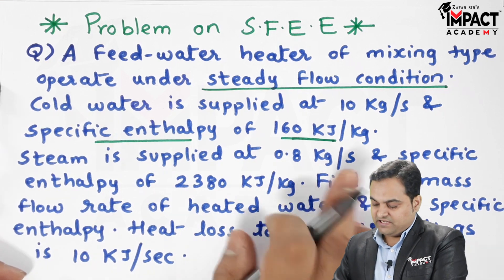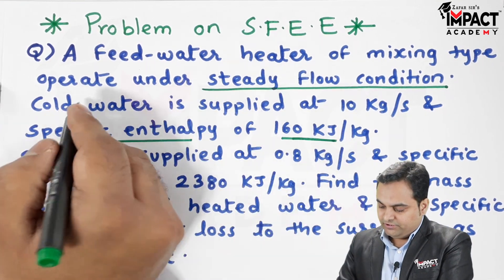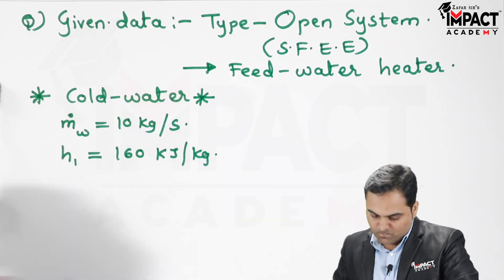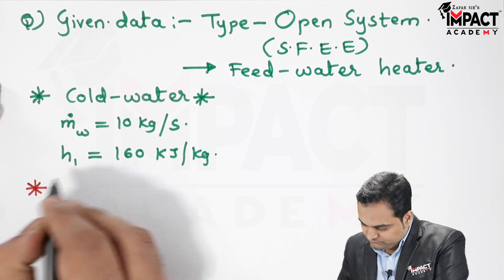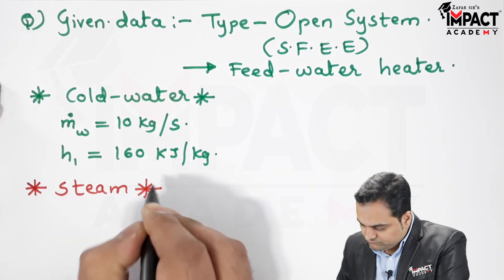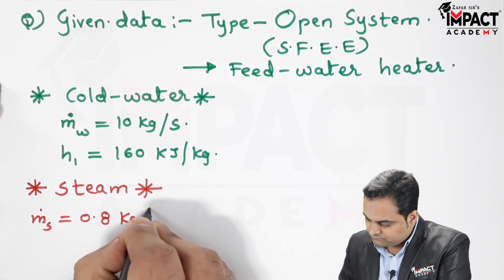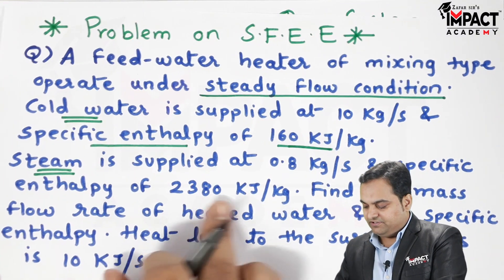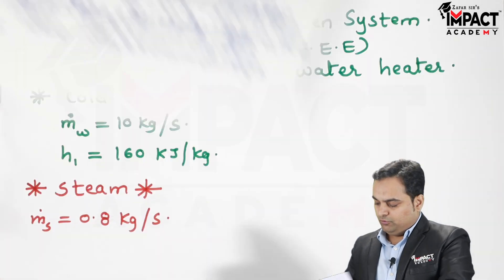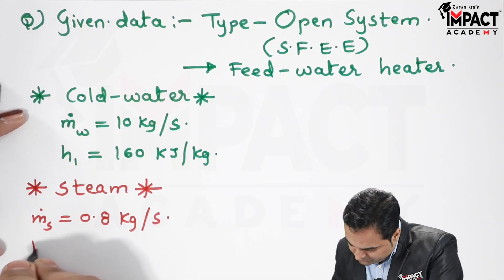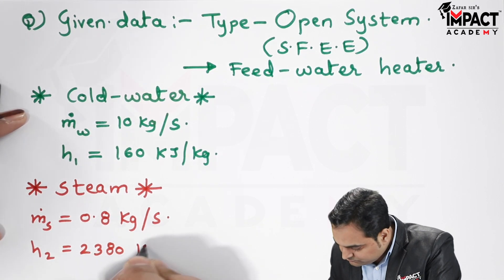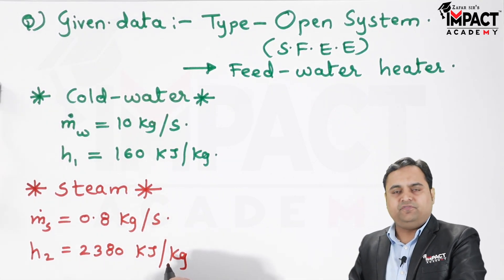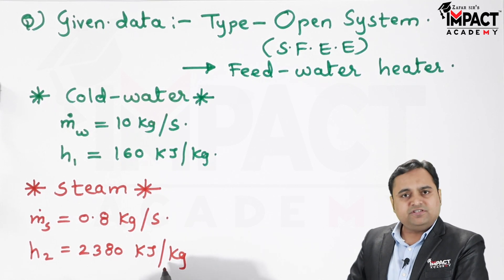Steam is supplied at 0.8 kg per second — the mass flow rate of steam is given. So in this feed water heater there are two fluids: cold water and steam. The mass flow rate of steam is 0.8 kg per second and its specific enthalpy is 2380 kilojoule per kg, denoted by H2. These are called specific properties because they are based upon per kg mass.